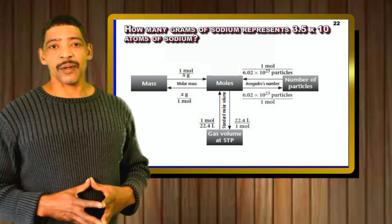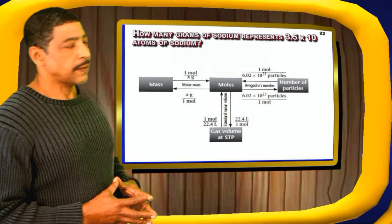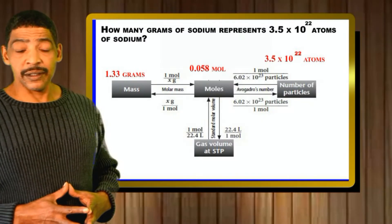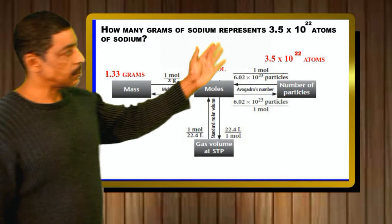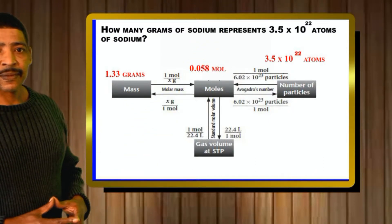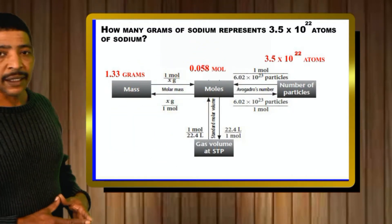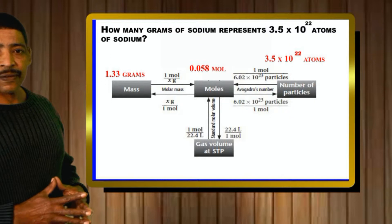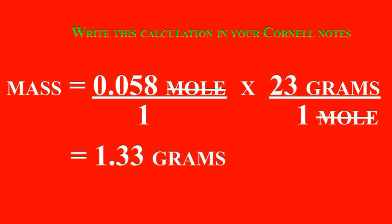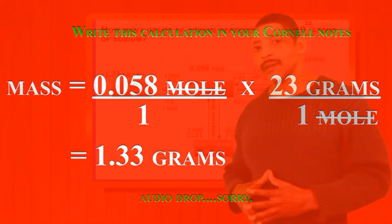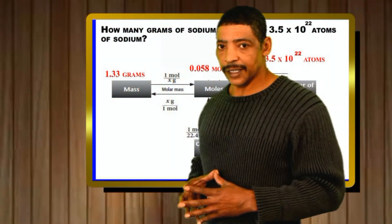In the practice problem, we're given 3.5 times 10 to the 22 atoms of sodium, and we're asked to determine the mass. We begin in the particles box and go to the moles box. We divide 3.5 times 10 to the 22 by Avogadro's number, which equals 0.058 moles. To determine the mass, we multiply, which equals 1.33 grams.